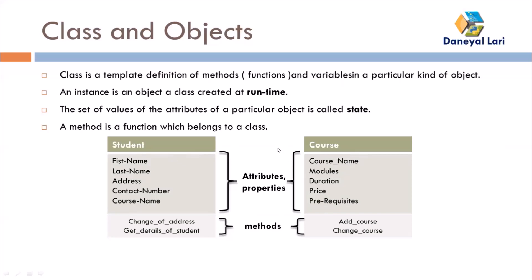So functionality means methods and properties means attributes. To summarize: a class is a blueprint, and an object is an instance of a class created at runtime, which has attributes, behavior, and existence. The existence is of the object, not the class. To create objects you need a class definition. In the next session I'll describe how to create a class and how to create objects in Python programming.